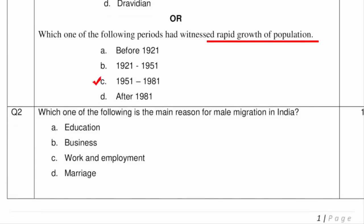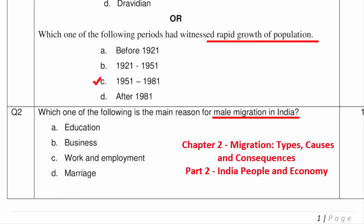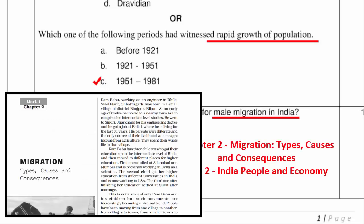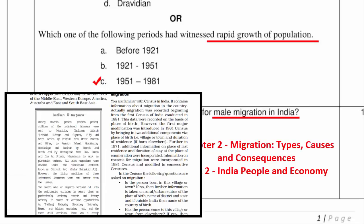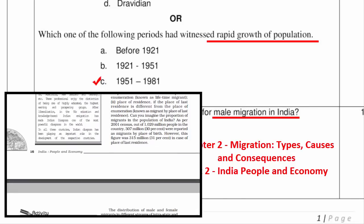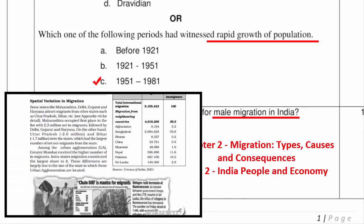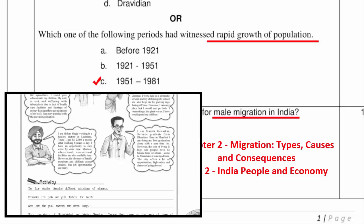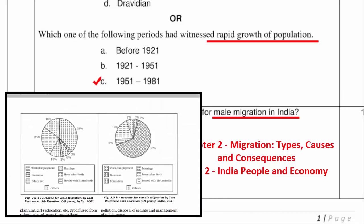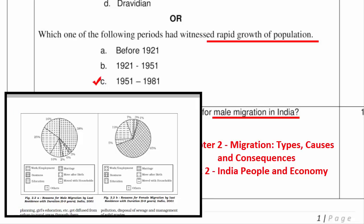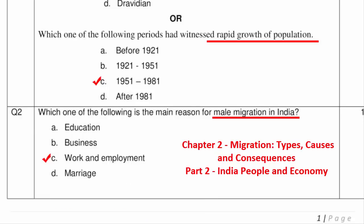Question 2 asks which one of the following is the main reason for male migration in India. This question is from Part 2 book, Chapter 2 Migration, directly taken from the topic 'causes of migration.' Work and employment have remained the main cause for male migration at 38%. A pie chart in the chapter shows reasons for male migration, and another shows reasons for female migration — for females, the main reason is marriage.